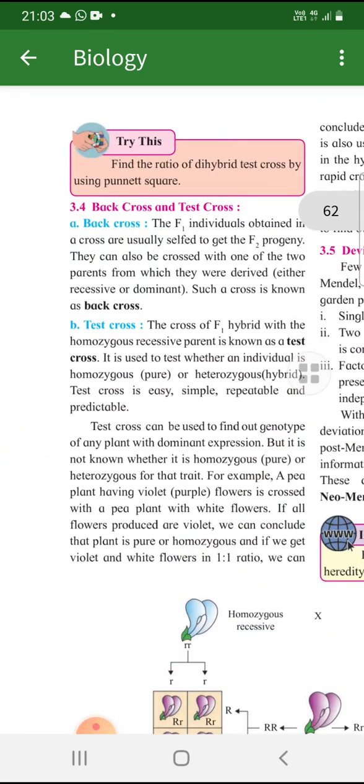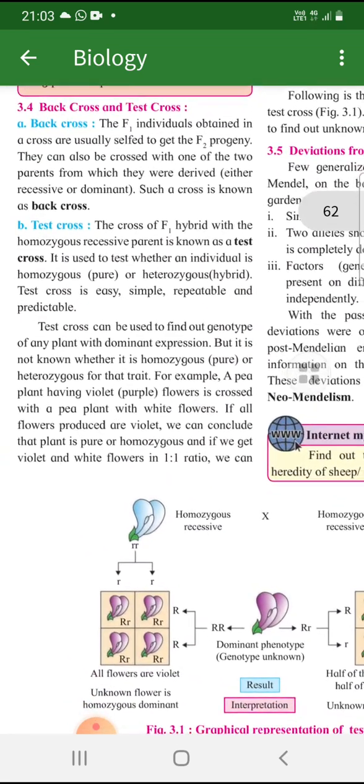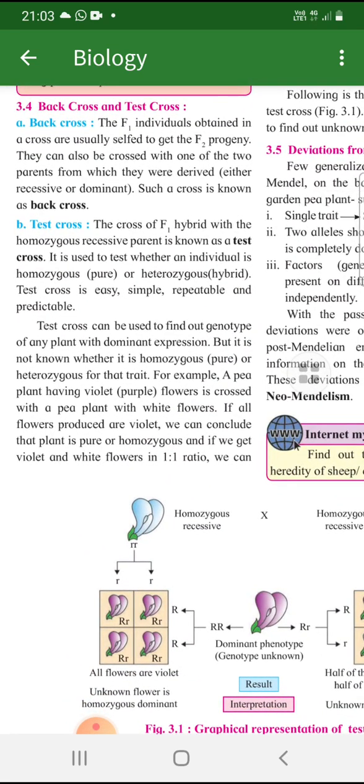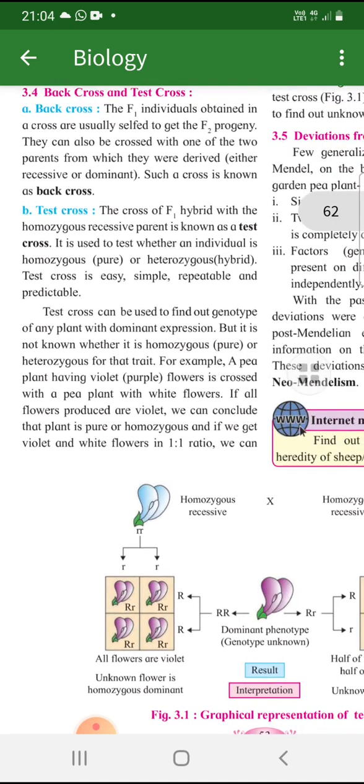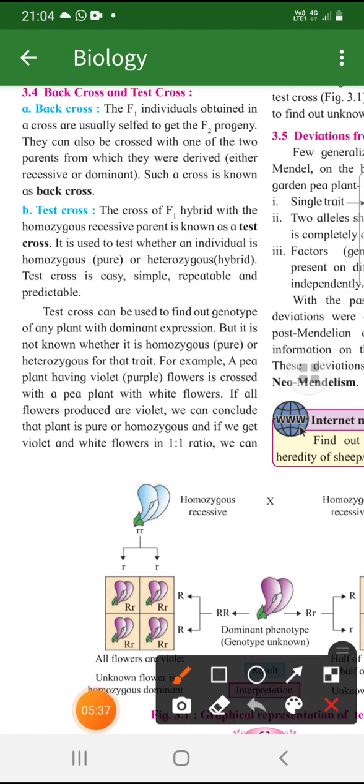Now, let us understand what is a back cross. When we talk about back cross, when F1 individual is crossed with the parent. It is basically self-together. F1 individual is obtained in a cross wherein the cross is with one of the two parents. It can be dominant parent. It can be recessive parent. Kisi bhi parent ke saath ho. So, you call that as a back cross.